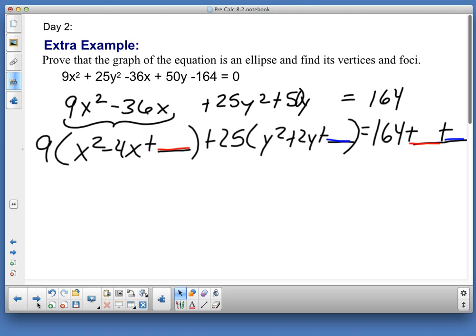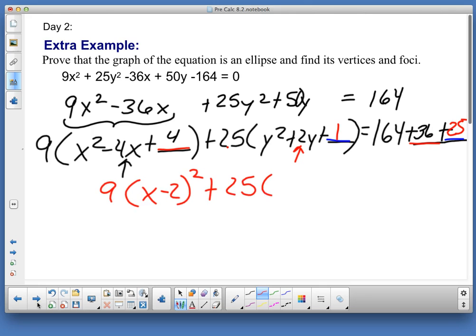So, when we're doing this, again, half of negative 4 is negative 2 squared is 4. But remember, I'm adding 36 here. So, bless you, I'm going to add 36 over here. Because that's 4 times 9, 36. And in the same fashion, here, I got 25, but that's half of 2 squared. No, 1 squared is 1. But I'm adding 25. Now, I've got 9, x minus 2, quantity squared, plus 25, y plus 1, quantity squared, equal 164, 36, it's 50, 61, 225.